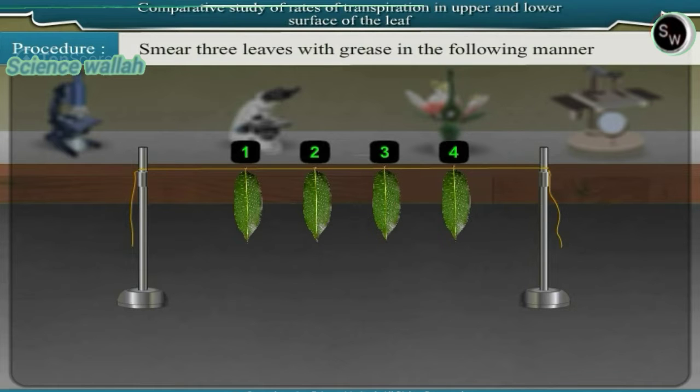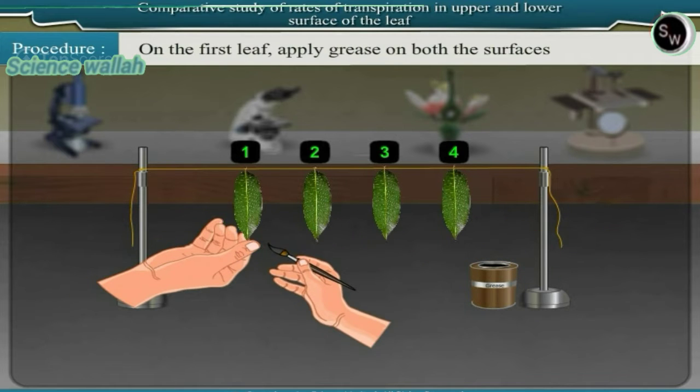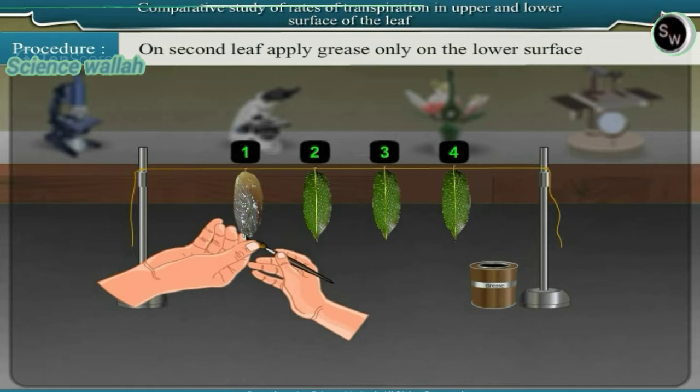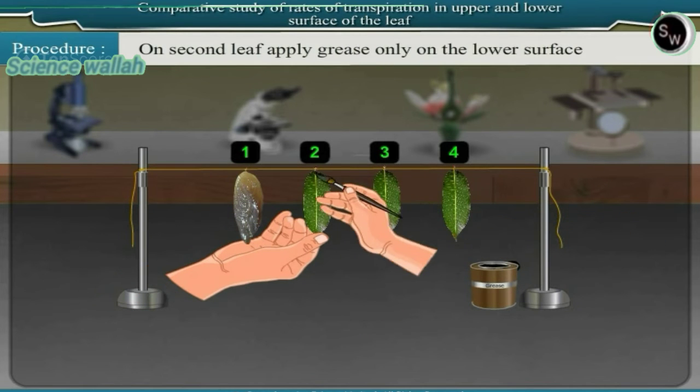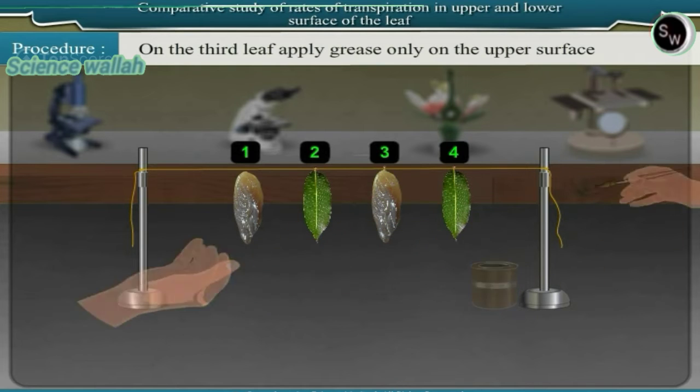Smear 3 leaves with grease in the following manner. On the first leaf apply grease on both the surfaces. On second leaf apply grease only to the lower surface. On the third leaf apply grease only on the upper surface.